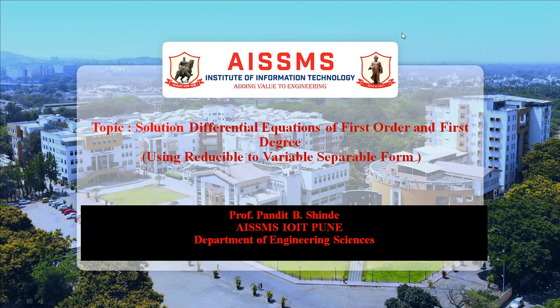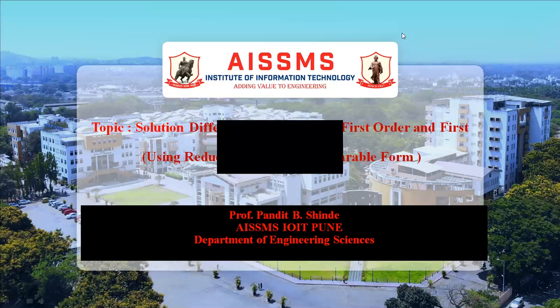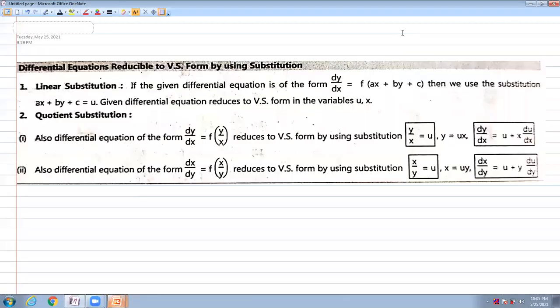In this topic, in the previous topic we saw the variable separable form directly. But in variable separable form, there are some questions in which it is not directly possible to convert to variable separable form. So, to convert these, we want to use some substitutions.